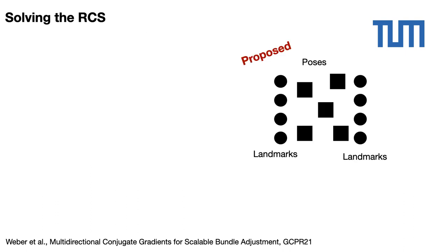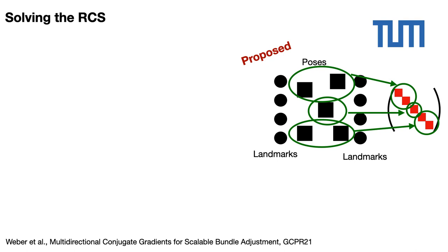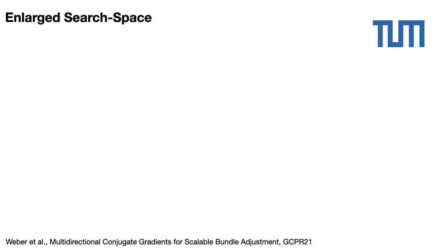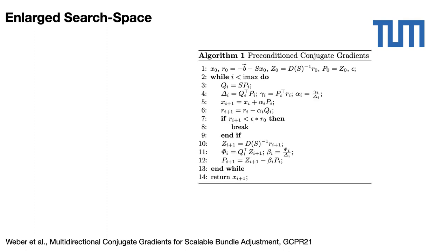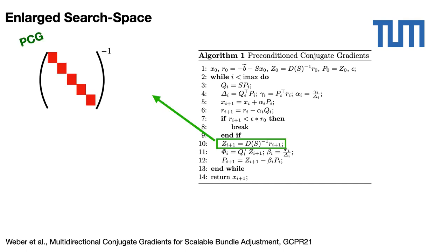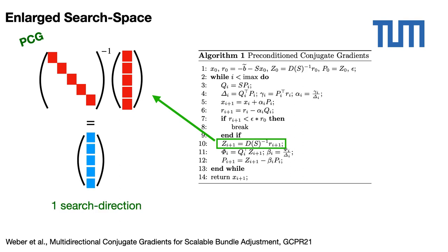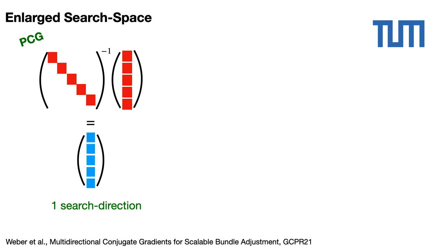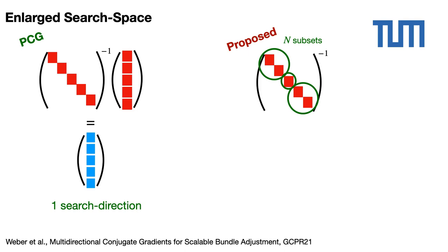Alternatively, we propose to decompose the set of poses into N subsets, and take into consideration the corresponding blocks inside the block-Jacobi preconditioner. To more deeply analyze what will change, let's come back to the traditional PCG. PCG directly applies the preconditioner to the conjugate gradients residuals in order to form the conjugate vector, leading to a unique search direction per iteration.